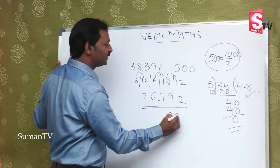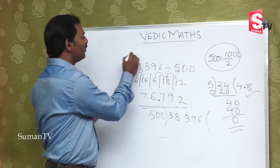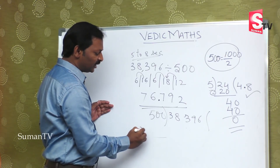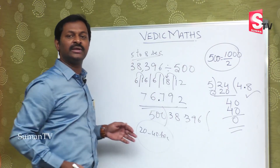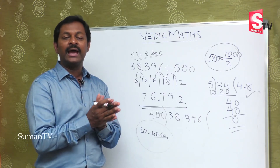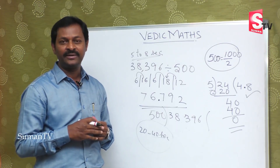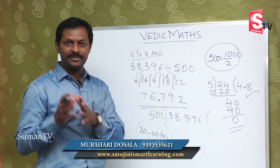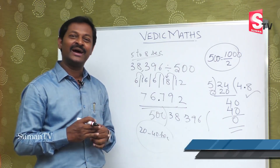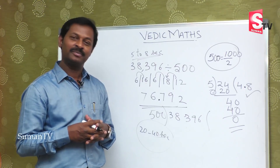In the traditional method, doing thirty eight thousand three hundred and ninety six divided by five hundred would take twenty to forty seconds. With this Vedic method you took almost five to eight seconds. By using these Vedic math techniques, speed increases and time is saved. This subject is one of the important subjects. If you practice it along with other subjects, you will be perfect. Stay tuned. In upcoming editions and programs, do not miss more new concepts. Thanks for watching.